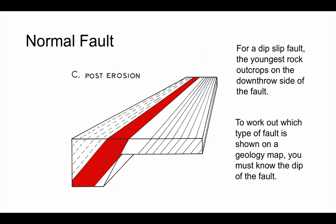To work out, when you're looking at a geological map, what type of fault it is, we need to know the downthrow side. We also need to know which way the fault is dipping. Very often, in an exam, you'll be given that information. Look out for it.